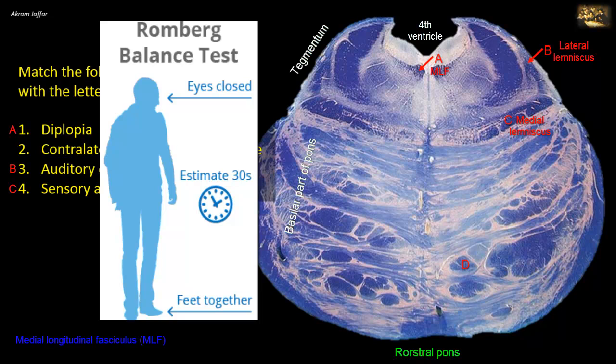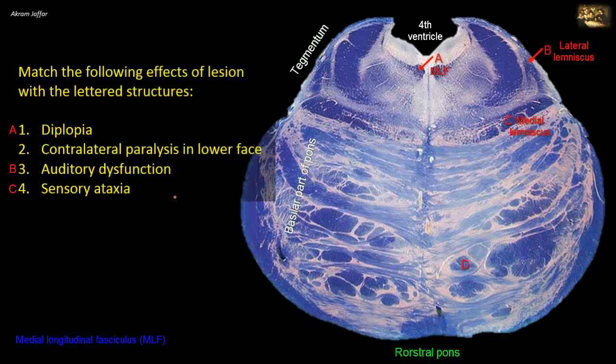If the patient is ataxic and Romberg's test is not positive, it suggests the ataxia is cerebellar in nature. D is a bundle of longitudinal pontine fibers — corticofugal fibers from the cerebral cortex. They include corticopontine, corticospinal, and corticobulbar fibers.